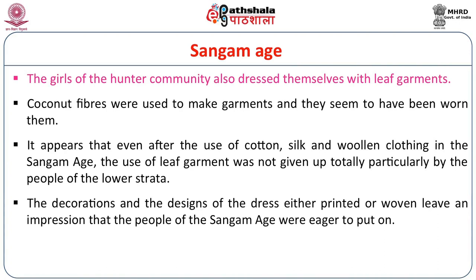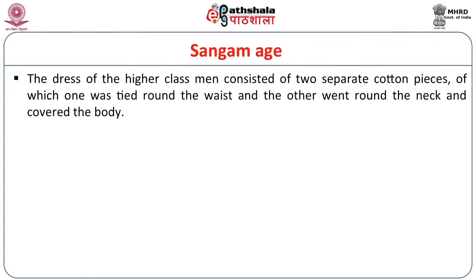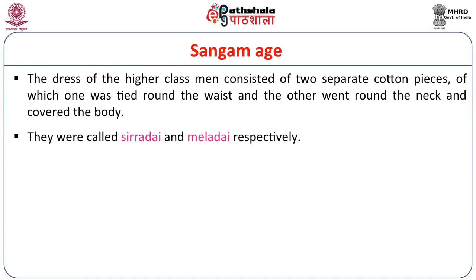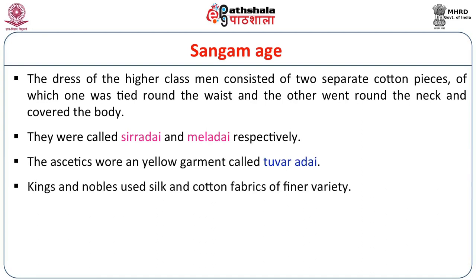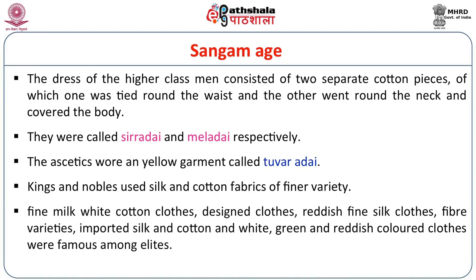The decorations and designs of the dress, either printed or woven, leave an impression of what kind of dresses they were eager to put on. The dress of the higher class of men consisted of two separate cotton pieces — one was tied around the waist and the other went around the neck and covered the body. They were called Siradai and Meladai respectively. The ascetics wore a yellow garment called Tuvaradai. Kings and nobles used silk and cotton fabrics of finer variety. Fine milk-white cotton clothes, designed clothes, reddish fine silk clothes, fiber varieties, imported silk and cotton, and white, green and reddish colored clothes were famous among the elites.